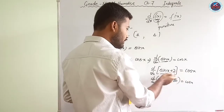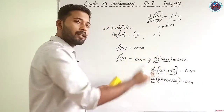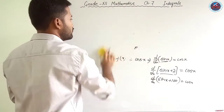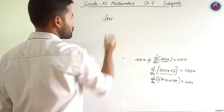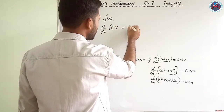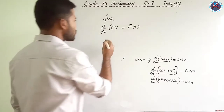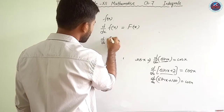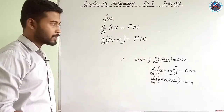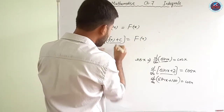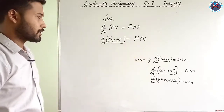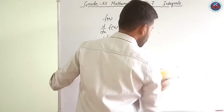So the anti-derivative of cos x is a family of anti-derivatives. To generalize: if we have a function f(x), and its derivative is denoted F(x), then d/dx of (F(x) + c) = F(x) as well. So F(x) + c represents the family of anti-derivatives of f(x).